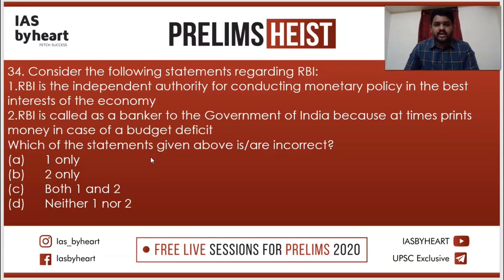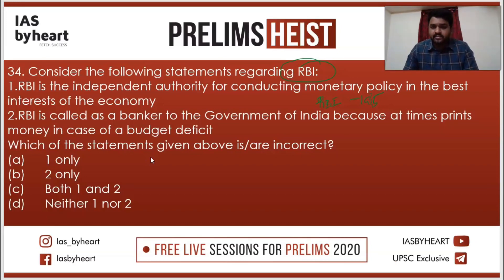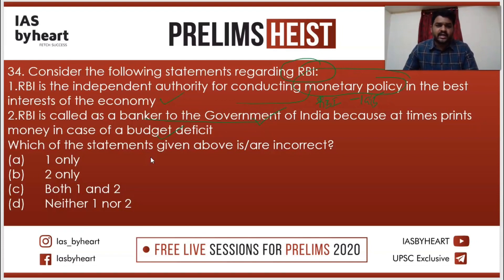Consider the following statements regarding RBI. The Reserve Bank of India was created in the year 1935 under the Reserve Bank of India Act, 1934. It is a statutory body. RBI is an independent authority for conducting monetary policy in the best interest of the economy — that is a correct statement. RBI is called the banker to the government, because it can print money in case of a budget deficit. Both statements are actually correct.